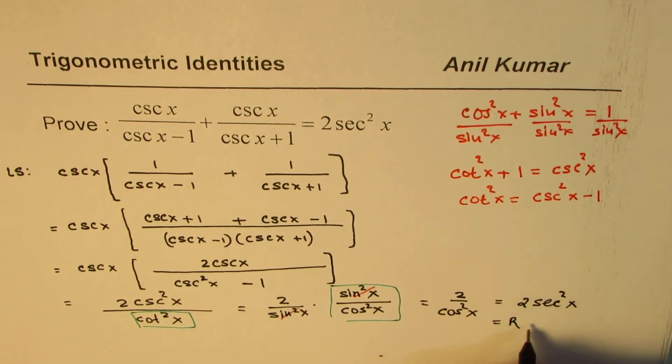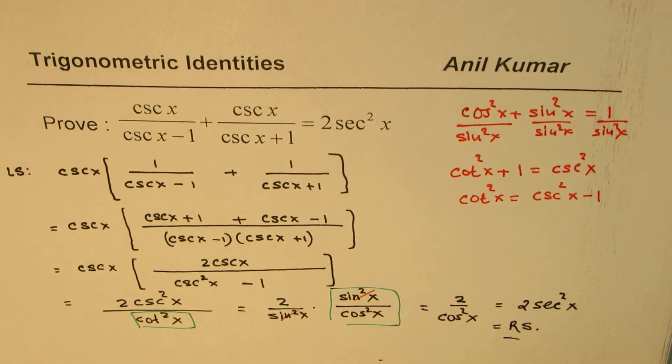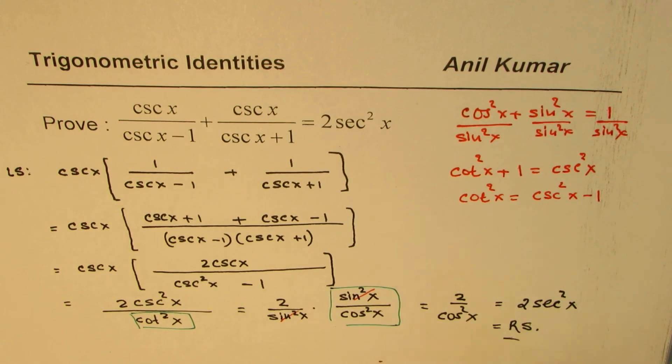That is the right side. So, that is how you could prove this identity. I hope the steps are absolutely clear. We use this Pythagorean identity to prove the given trigonometric identity. I'm Anil Kumar and I hope that helps. Thank you and all the best.